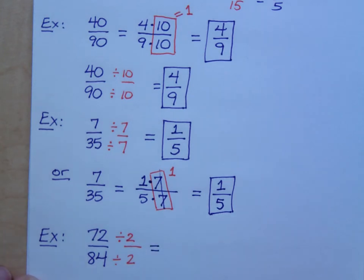What's 72 divided by two? That's 36, and what's 84 divided by two? 42.